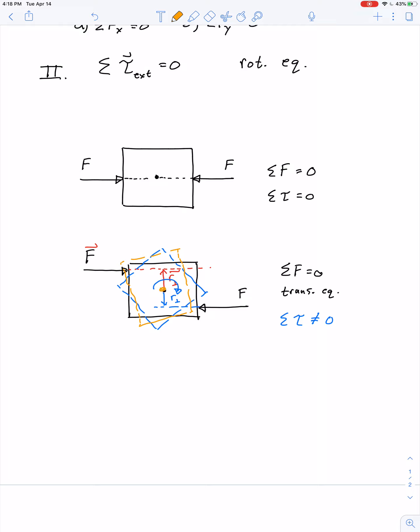But the center of mass isn't changing location. So that's why we say it's in translational equilibrium. There's no translation of the center of mass of the object. There's only a rotation. So the acceleration of the center of mass is equal to zero. But the angular acceleration of the system is not equal to zero.